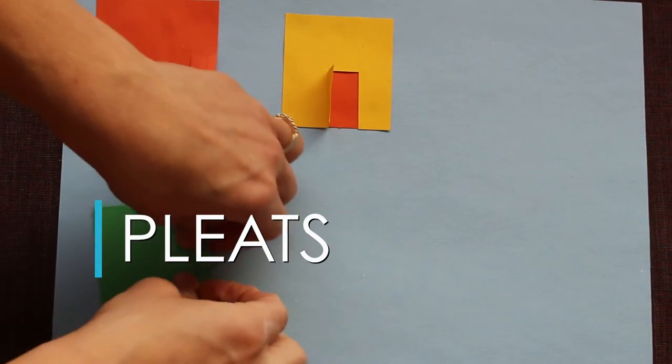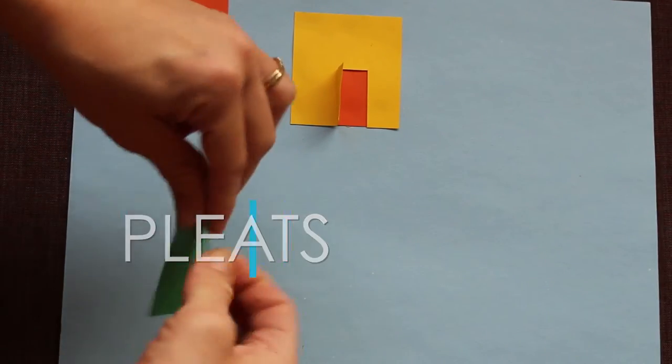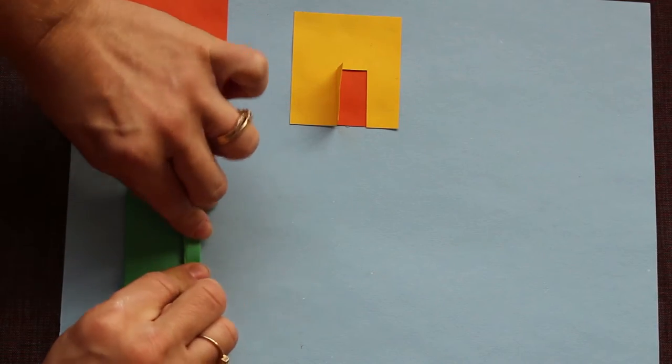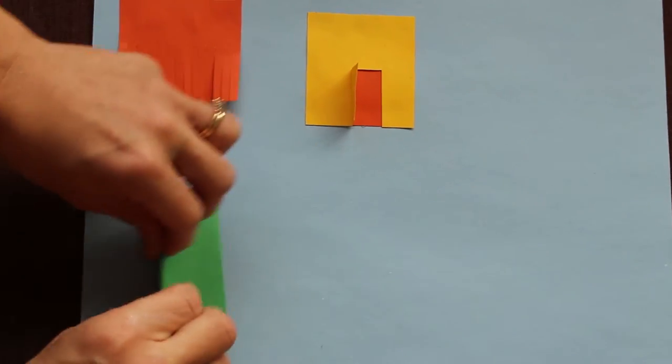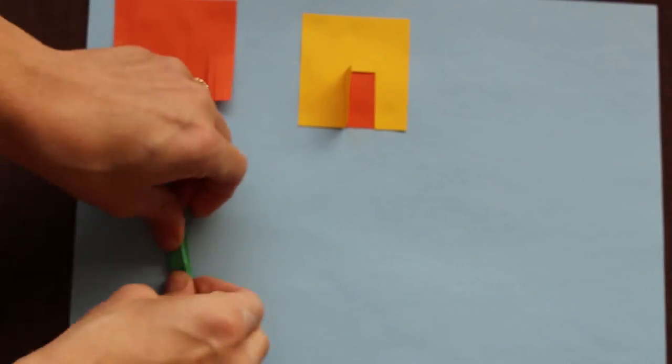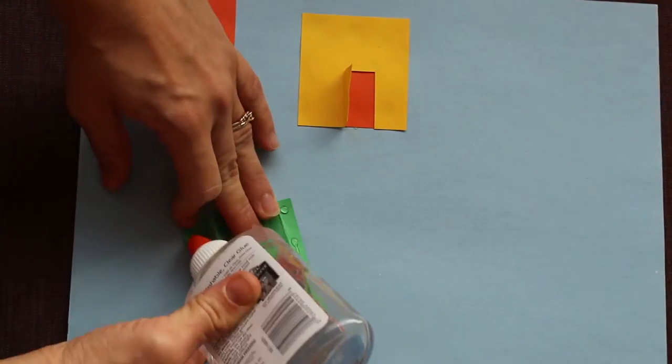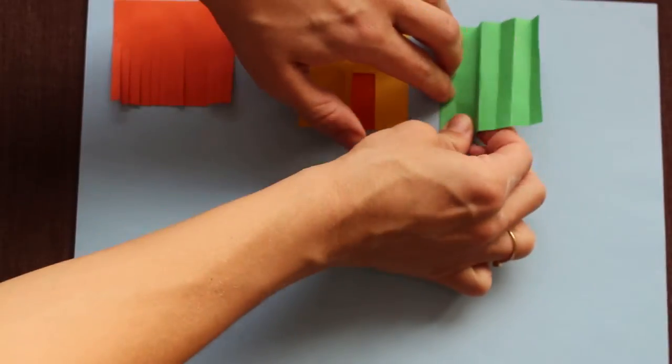Technique three, pleats. Take your paper and make a series of vertical folds. These are called accordion folds. This is the same technique used to make paper fans. Glue down the ends of the paper.